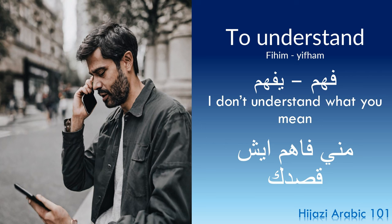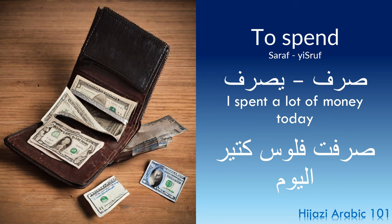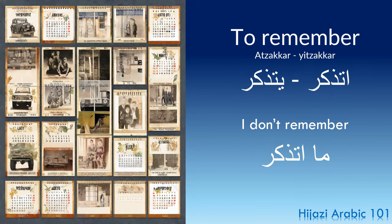To understand. Past tense: fahim. Present tense: yifham. Example: 'I don't understand what you mean' — 'Ma niffahim ish qassdak.' To spend. Past tense: saraf. Present tense: yasraf. Example: 'I spent a lot of money today' — 'Saraft flus kitir al-yom.' To remember. Past tense: atadhakkar. Present tense: yatadhakkar. Example: 'I don't remember' — 'Ma atadhakkar.'